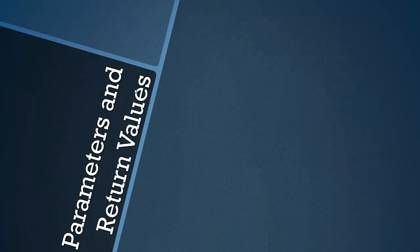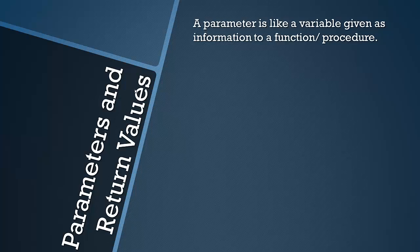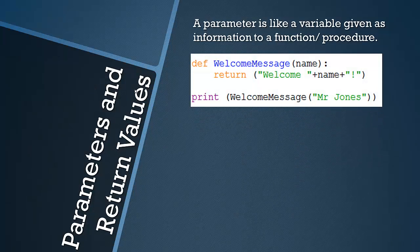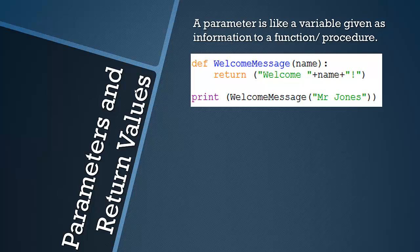So now I mentioned parameters, we're going to look at parameters and return values. Firstly, a parameter is basically like a variable given as information to a function slash procedure. You generally associate them with a function but obviously it does vary language to language. So in this example, this is a function I've simply made in Python.